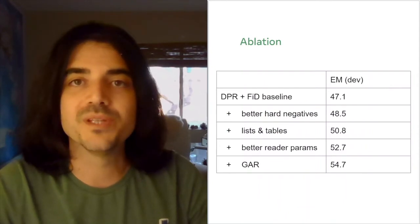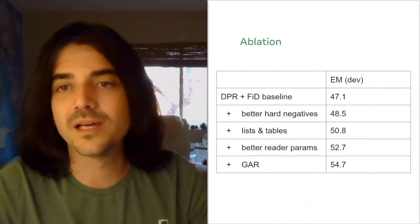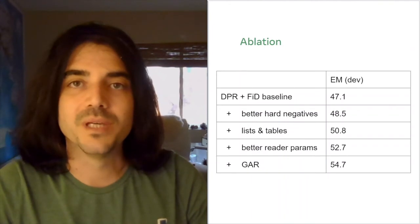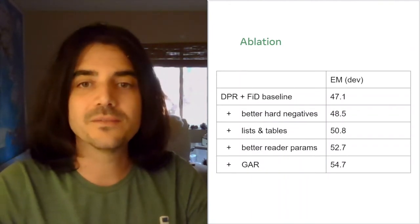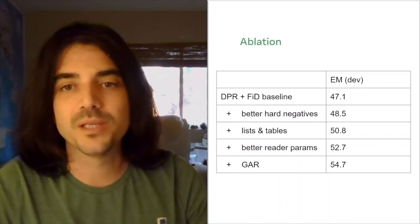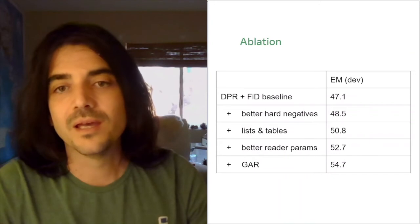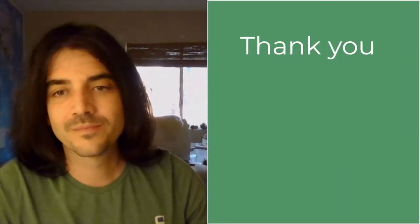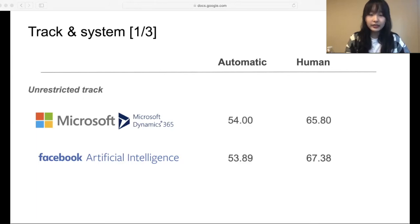Here are the ablation results. We start with a dense retrieval plus fusion in decoder baseline, around 47.1 exact match on the devset. With iterative training, with better hard negatives, we gain around a point and a half. Adding lists and tables gives us two more points, and similarly with better reader hyperparameters and generative augmented retrieval. So please don't hesitate to send me any questions via email, and thank you. So to aggregate the result, these are the accuracy of the systems, both achieving over 50 based on automatic eval and over 65 based on human eval. This is around 15-point improvement over the baseline, which was the state-of-the-art when we started the competition.